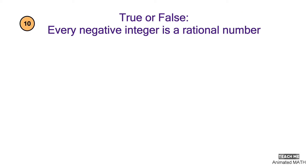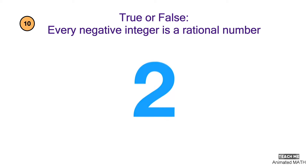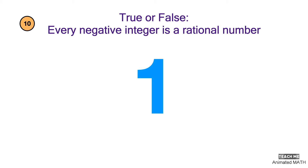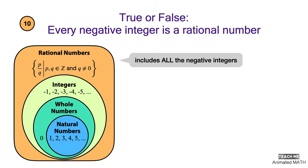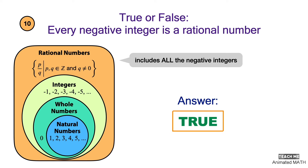True or false: every negative integer is a rational number. This is our diagram for the set of rational numbers. It includes the set of integers, so it also includes all the negative integers. The answer is true.